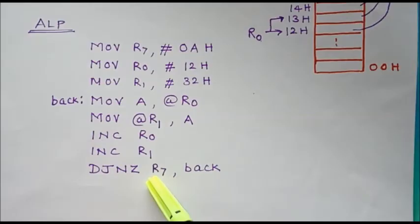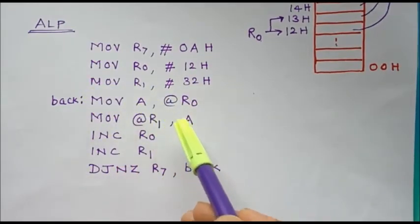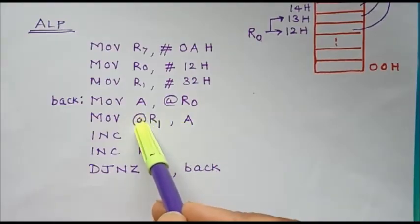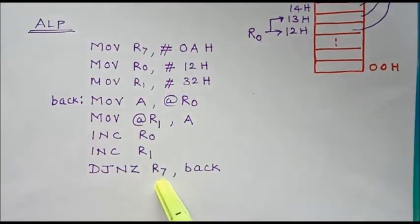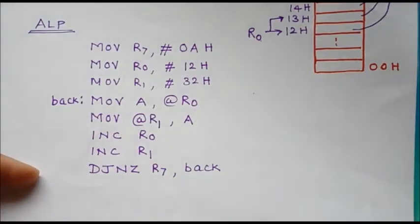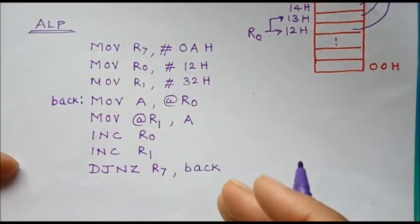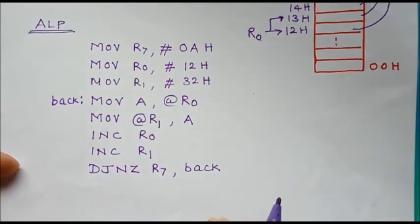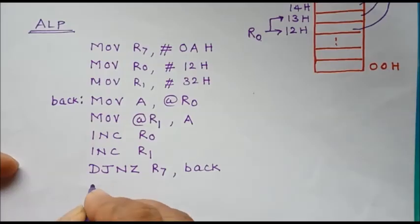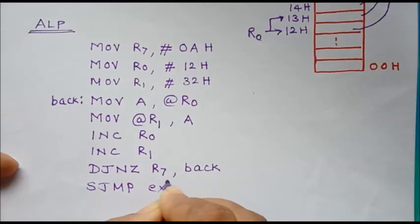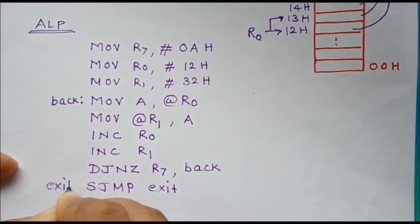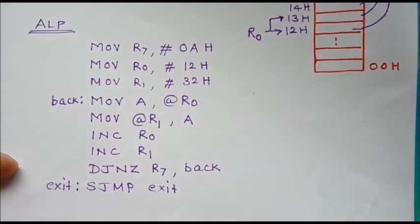We decrement register R7, and if it is not zero, we loop back to read the next byte from the source and store it at the destination. If the contents of R7 become zero, that means we have completed transferring all 10 bytes from the source location to the destination location and we stop the program. For that, we write the instruction SJMP EXIT, and the EXIT label points to this same instruction, so the microcontroller continuously executes it, halting the program.